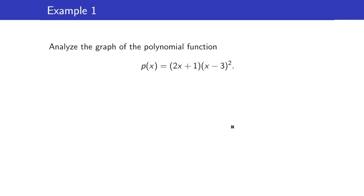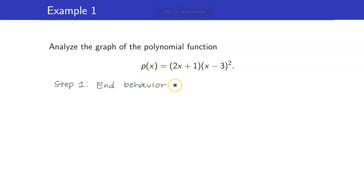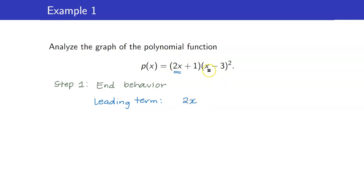For example, let us analyze and graph this polynomial function. For our first step, we need to determine the end behavior, which is determined by the leading term. Looking at the factors, the leading term in the first factor is 2x, and the leading term in the second factor is x, but it's raised to 2. Therefore, the leading term is 2x cubed.